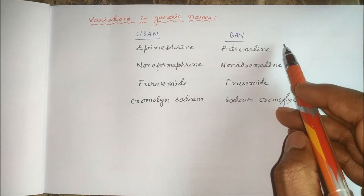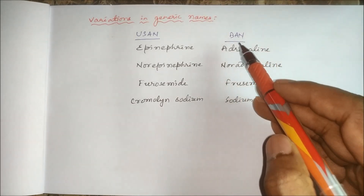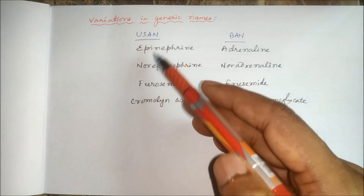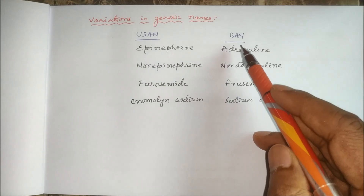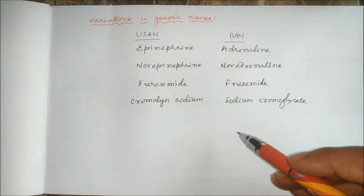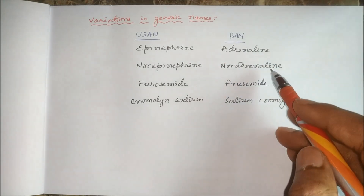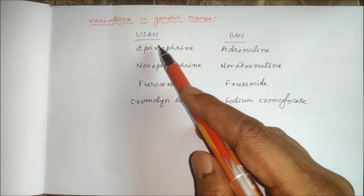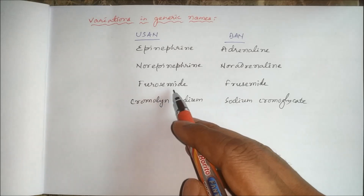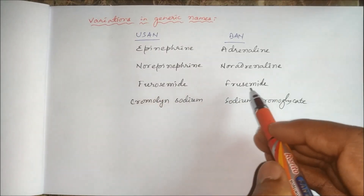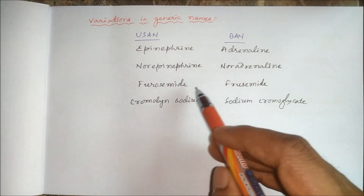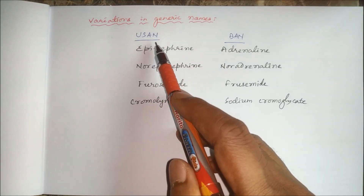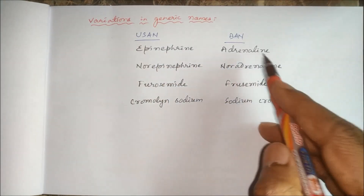Adrenaline and epinephrine are the same molecule — as per USAN it is epinephrine, and as per BAN it is adrenaline. Similarly, noradrenaline as per BAN and norepinephrine as per USAN. Furosemide and frusemide are both the same diuretic molecule — furosemide is given by USAN and frusemide is given by BAN.